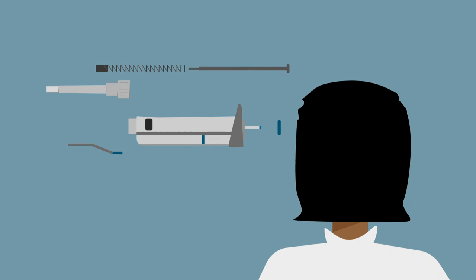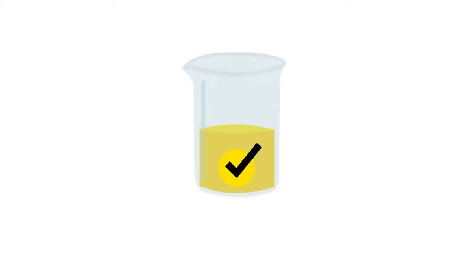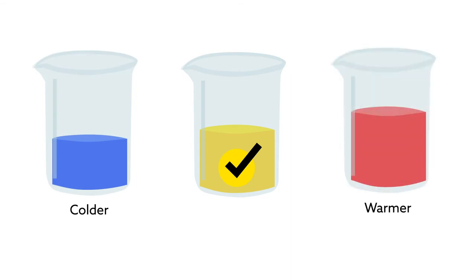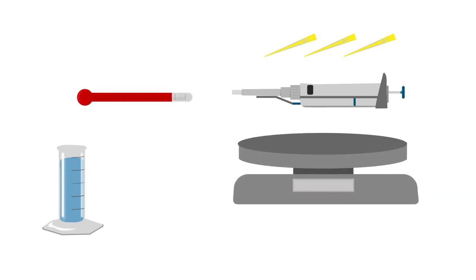To calibrate your pipette, use samples at the same temperature as the liquids you will dispense later. Colder liquids are denser than warmer liquids. You'll need a pipette, tips, roughly 5 milliliters of distilled water, a thermometer, a balance capable of measuring micrograms, weight boats, and a container for the water.